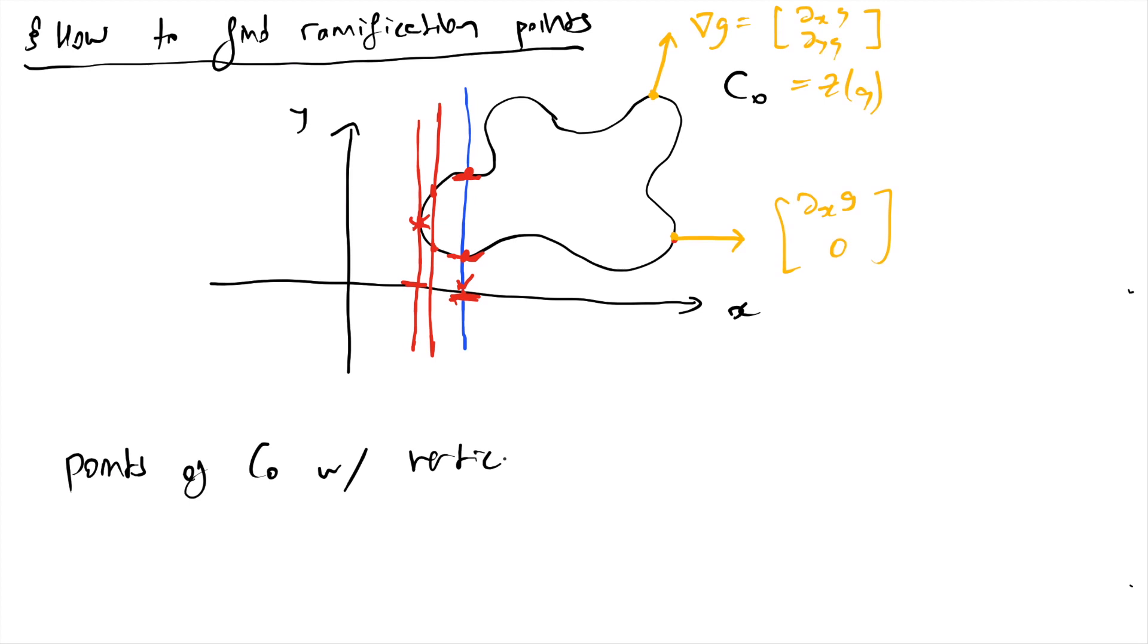So it's the zero locus of g and partial y of g. Well now, we can solve such polynomial systems. I have two equations and two parameters. I can find these coordinates. We've been studying this in the past lectures. Once I find points with vertical tangents, then their x-coordinates will be my ramification points on the x-axis.